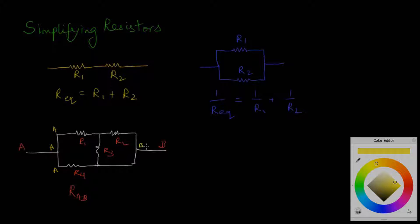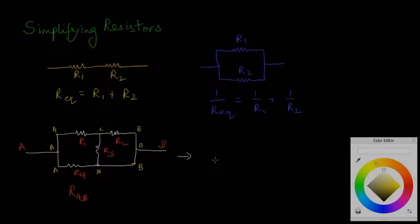And from this side, this point should have a potential of B. This point should have potential of B, and this point should have a potential of B, and so should this point. And this point — well, this point should have a different potential, so let's just call it potential C.